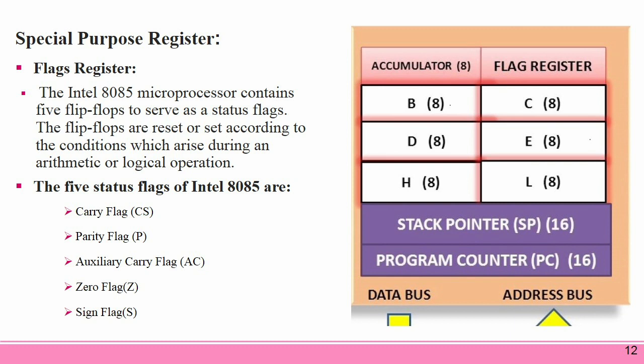Flag Register: The 8085 microprocessor contains 5 flip-flops to serve as status flags. The flip-flops are set or reset according to the conditions which arise during an arithmetic or logical operation. The 5 status flags of the 8085 are: carry flag, parity flag, auxiliary carry flag, zero flag, and sign flag. If a flip-flop for a particular flag is set, it indicates 1; when it is reset, it indicates 0.